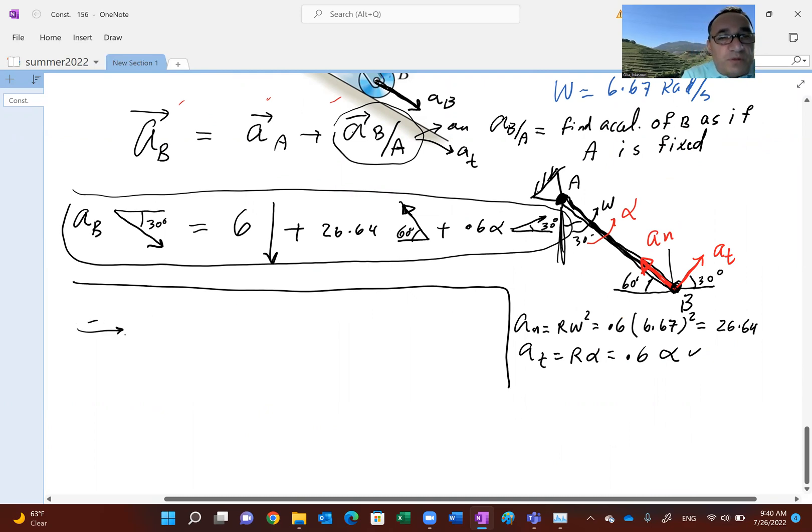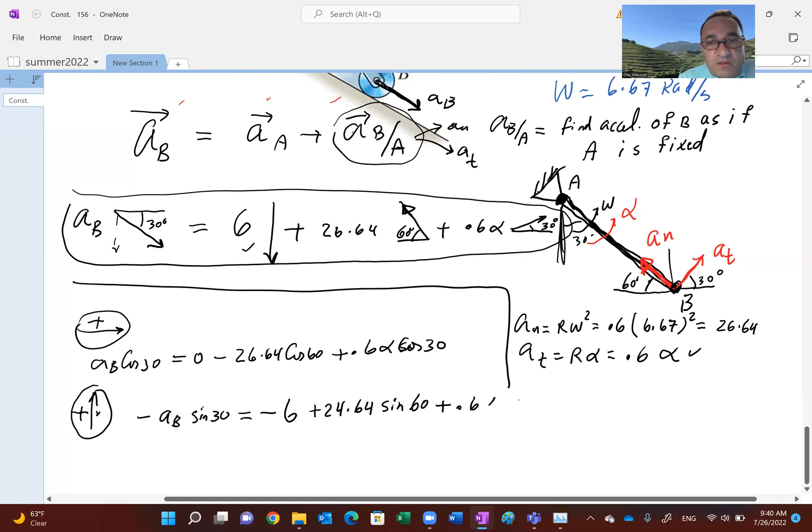So for example, if you look at the horizontal component, I'll take that to be positive. So what's the horizontal component of AB? It's AB cosine 30, nothing from the six. A negative 26.64 since it's moving to the left, cosine 60, and a positive 0.6 alpha cosine 30. So there are two unknowns there. So I'll go to the next equation, which is equating the vertical component. So I picked this to be positive. So I have minus AB sine 30, since the component is down. Y component. A negative six from here. And then a positive 24.64 sine 60, and a positive 0.6 alpha sine 30. Okay, use a substitution method or any method you want to solve the two equations. So simultaneously, you end up actually getting a negative answer for both of them.